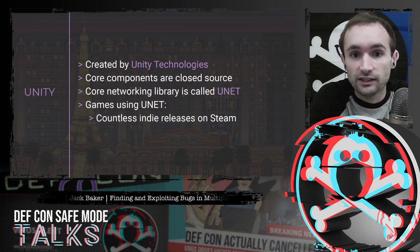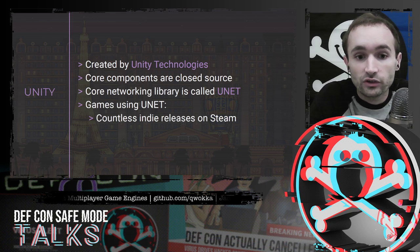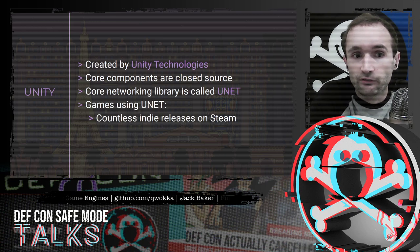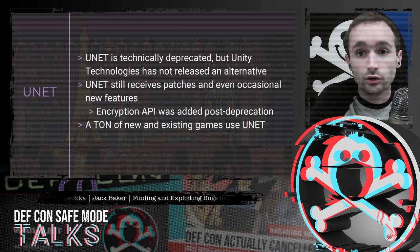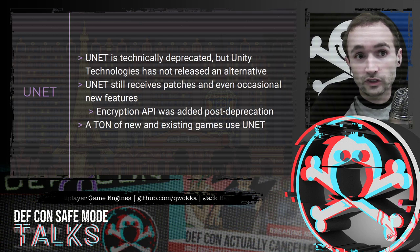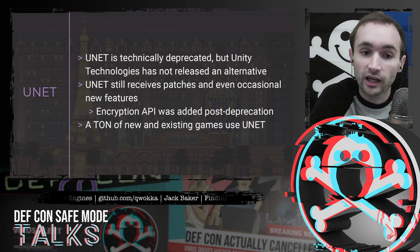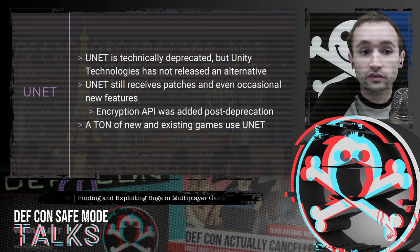Unity is built by Unity Technologies. There are some open source components, but the core components of Unity are closed source. The core networking library we're going to look at is called UNet. While I couldn't find a lot of big games using UNet, there are countless indie releases on Steam built using it. UNet is deprecated, but it hasn't got an official replacement yet, still receives patches and occasional new features — the encryption API was actually added after deprecation. A ton of existing games use UNet, so I think bugs in it still have value.